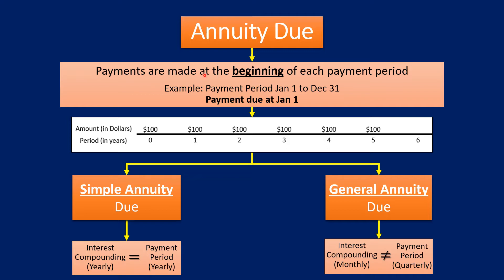An annuity due is when the payments are made at the beginning of each payment period. For example, if you're making an investment for six years and the payment period is from January 1st to December 31st of each year, the payment would be due on January 1st of each year beginning in year zero. So you'd make payments of $100 from year zero up to year five — the last of six payments is in year five.